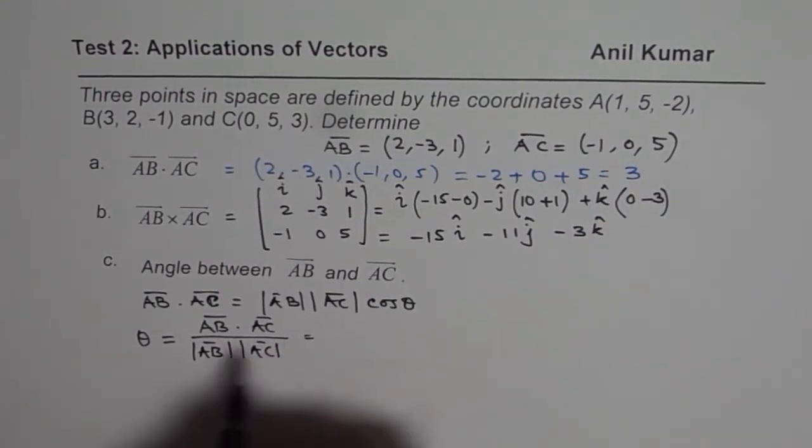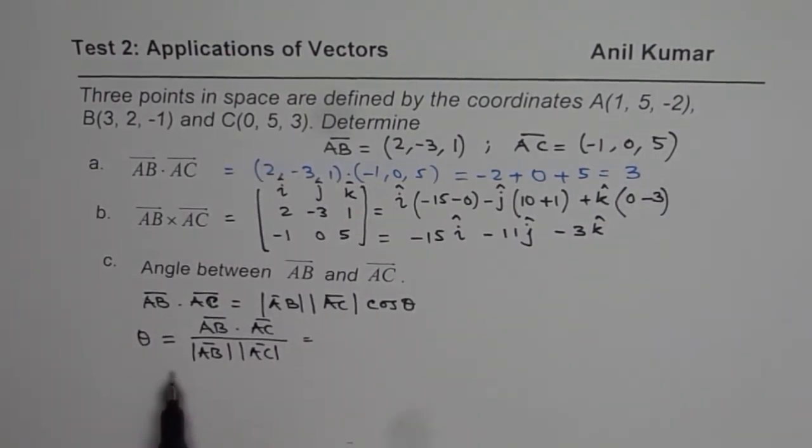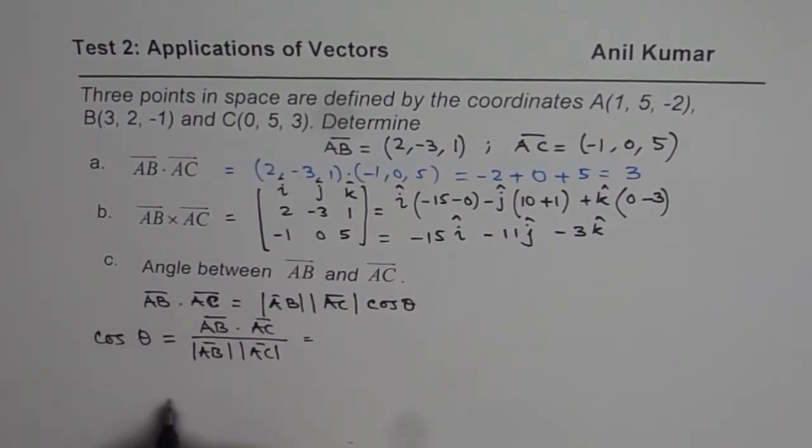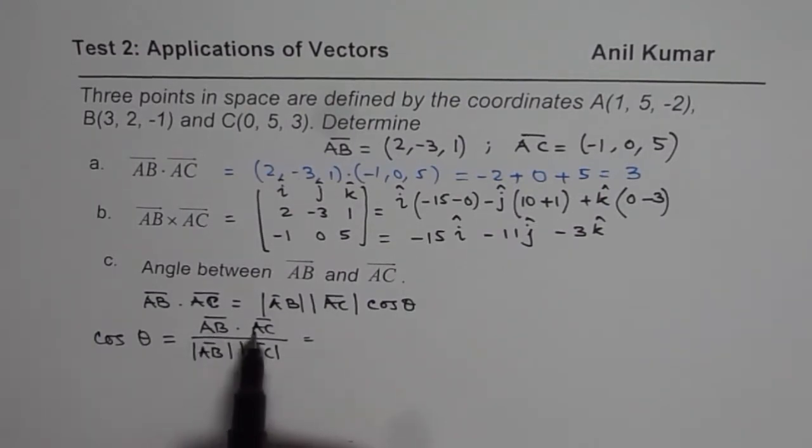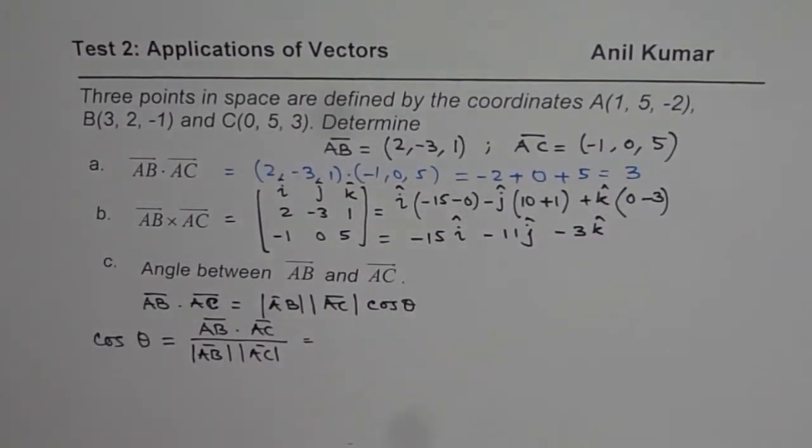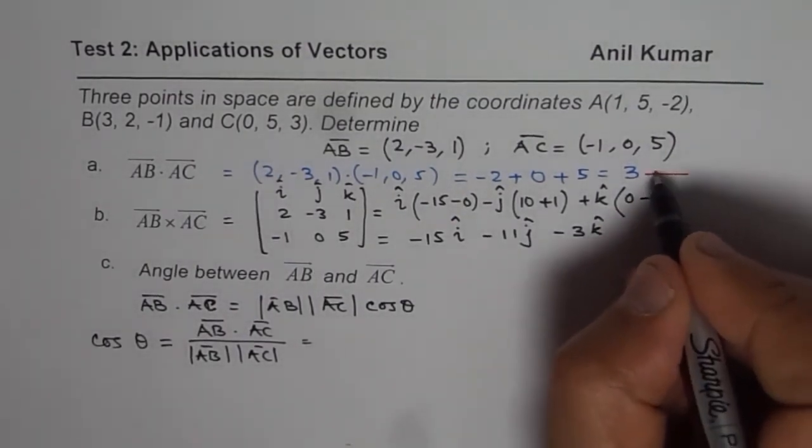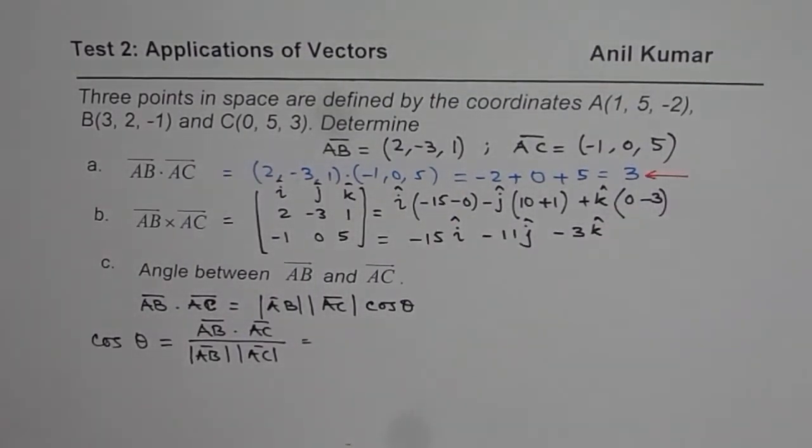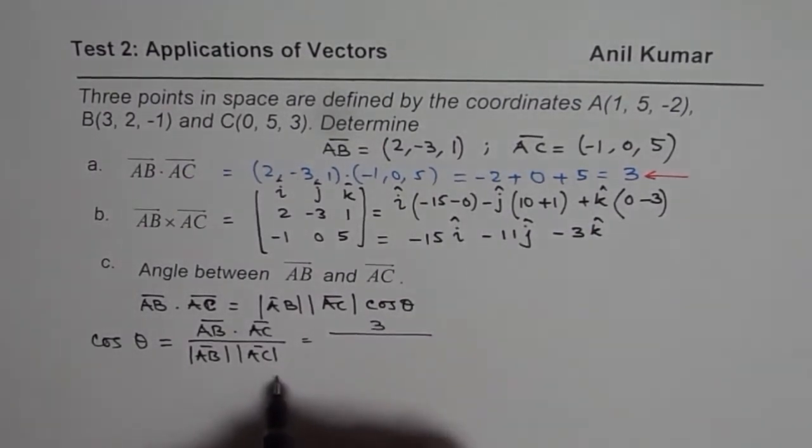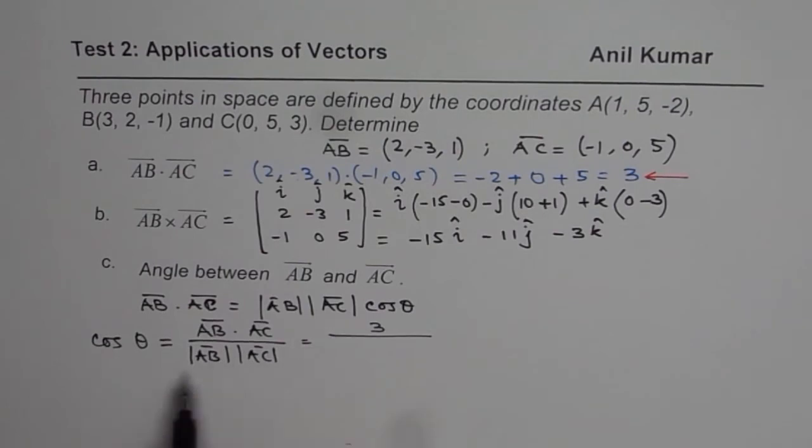So that is how you can find the angle, and then I should write cos theta here. Then we'll write theta as cos inverse of this value, and find the value. Now, AB dot AC, we calculated as 3, so I'll use this value 3 here. So we have 3 here on the top, and magnitude, it's a good idea to find the magnitude separately. Magnitude of AB, let me calculate the magnitude here.